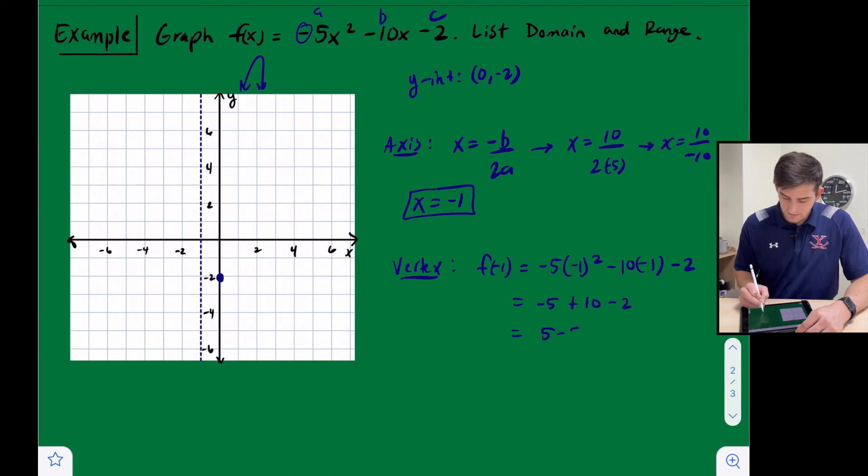So this is 5 minus 2, and we get 3. So our vertex is the x-coordinate from our axis of symmetry, negative 1, and then we plugged in 3. So negative 1 and 3.